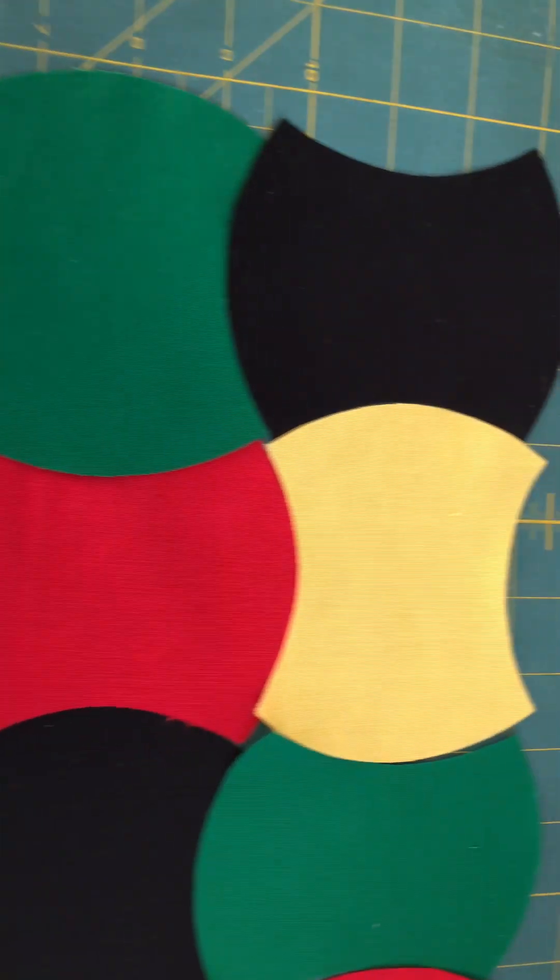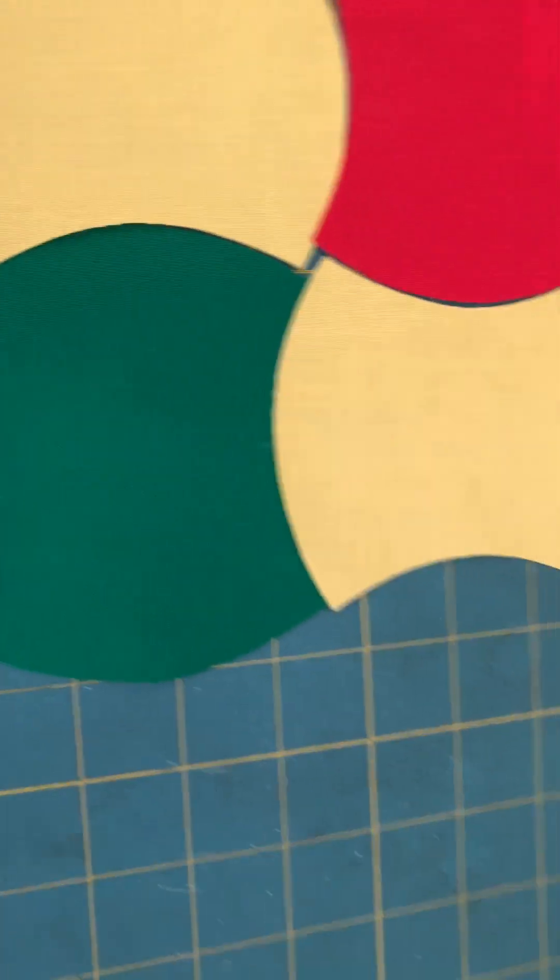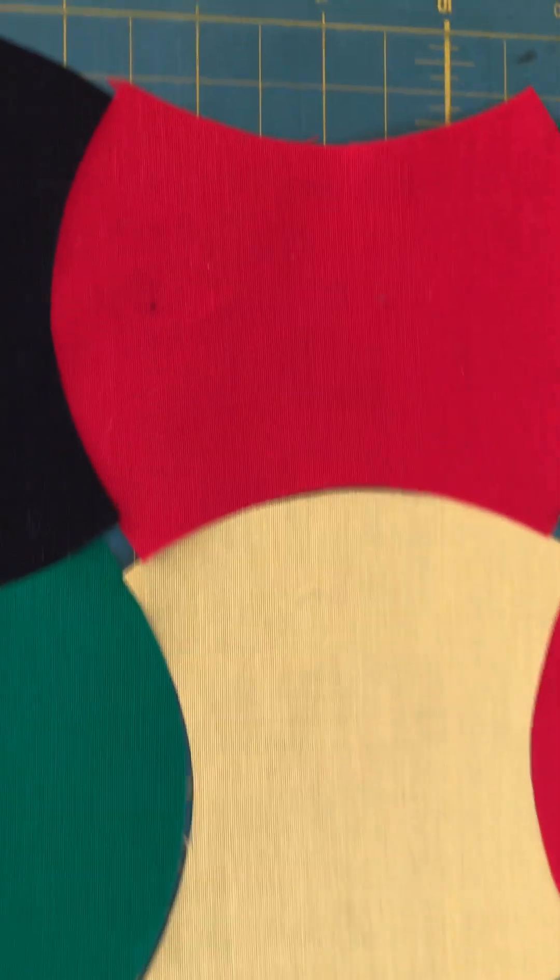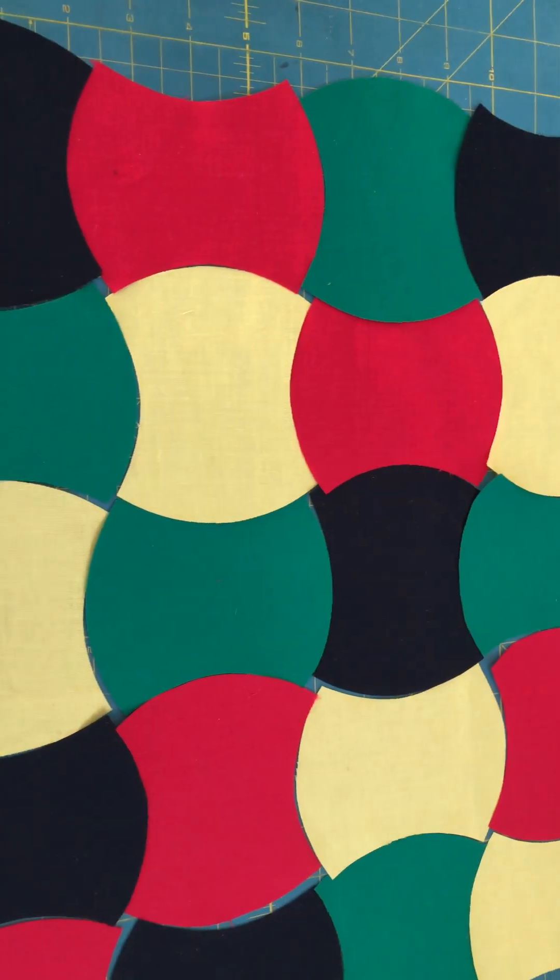So I have one four patch, two four patch and then a two patch. That's another four patch and another four patch then a two patch and that's how I'll sew my placemat together.